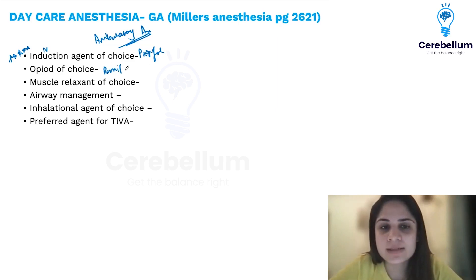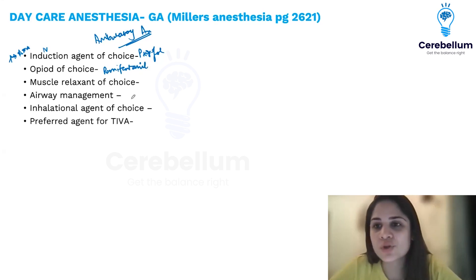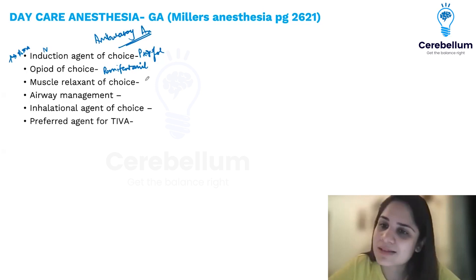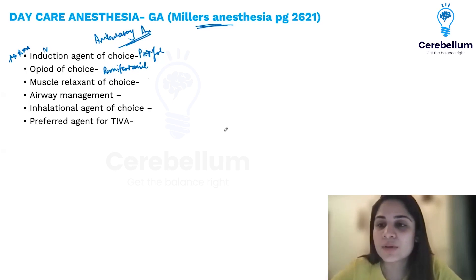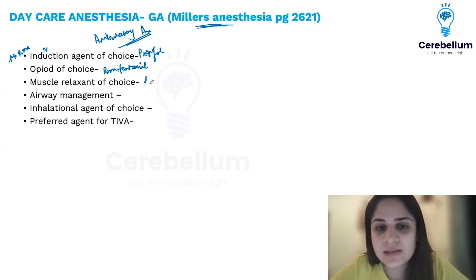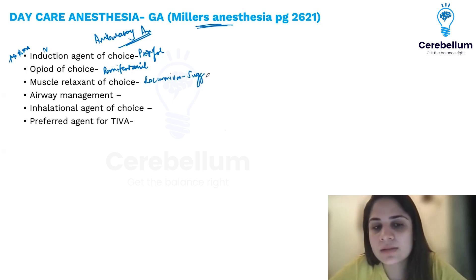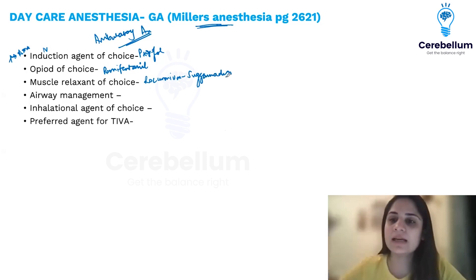The opioid of choice is the shortest-acting opioid: remifentanil. For muscle relaxant, the shortest-acting is succinylcholine, but as per Miller's Anesthesia — the equivalent of Harrison's for medicine — the preferred combination is rocuronium and sugammadex.